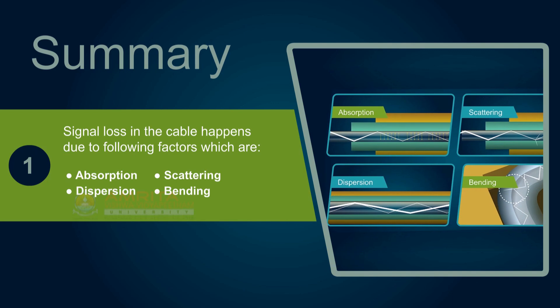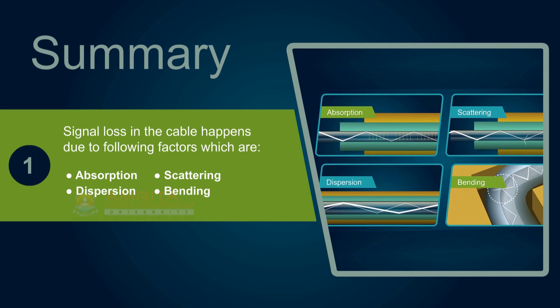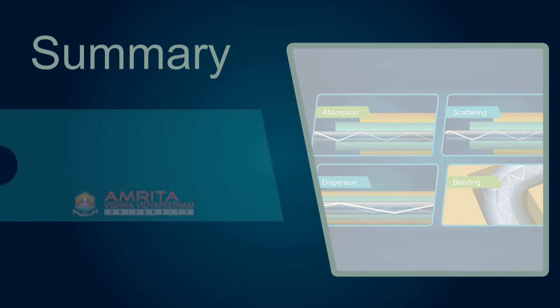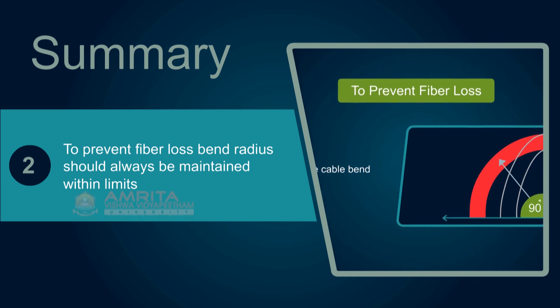Signal loss in the cable happens due to the following factors: absorption, scattering, dispersion, and bending. To prevent fiber loss, bend radius should always be maintained within limits.